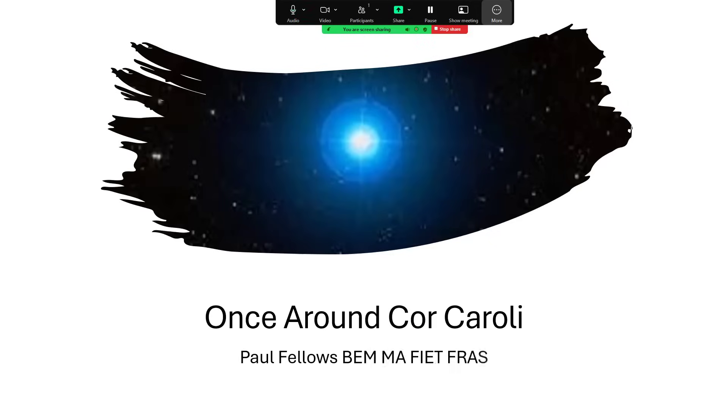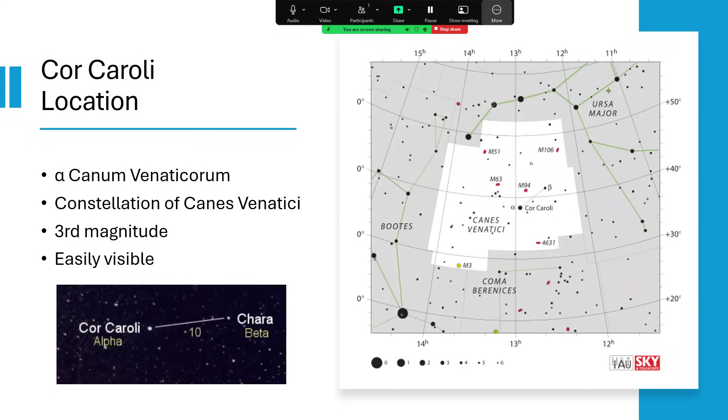Once around Cor Caroli. Cor Caroli is the brightest star in the constellation of the hunting dogs, Canis Venatici. The constellation stick diagram just shows two stars, Alpha and Beta, with a line between them. It's a little difficult to see how you make a pack of hunting dogs out of that, but nevertheless, that's where they are.